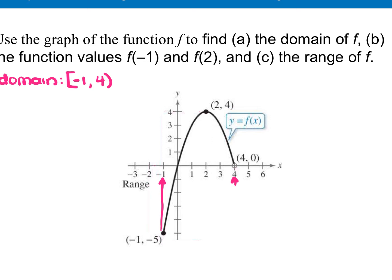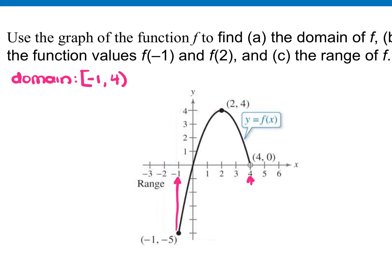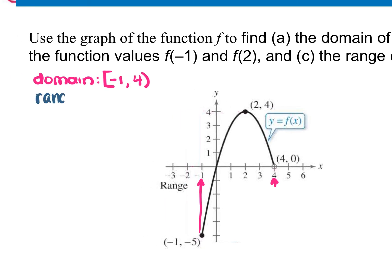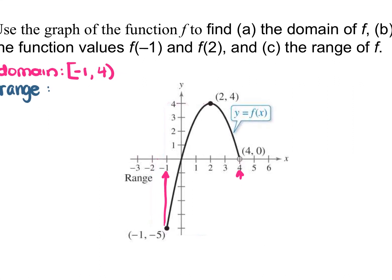From here, we're also going to identify your range. Your range are the y-values that are being covered, so look up and down on this graph. Your lowest value is at negative 5. That negative 5 gets a bracket because it's a closed circle on that point. The highest value that line goes up to is 4, and that ordered pair of (2, 4) has a closed circle, so that 4 will also get a bracket.